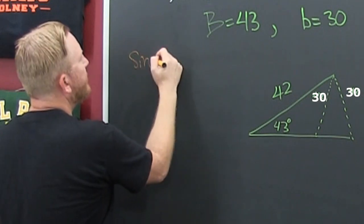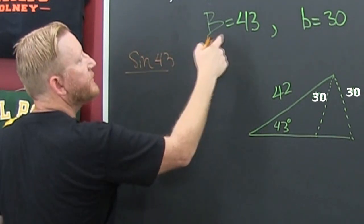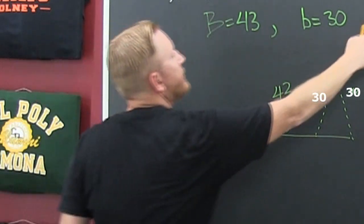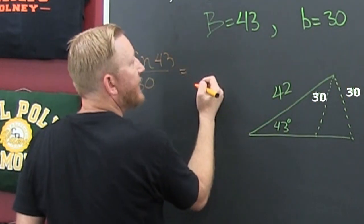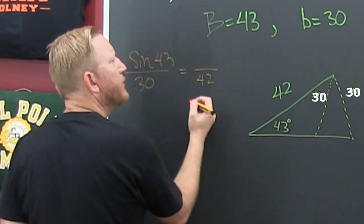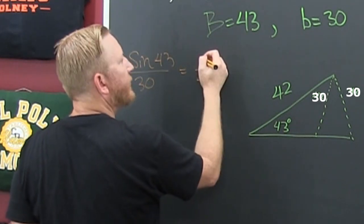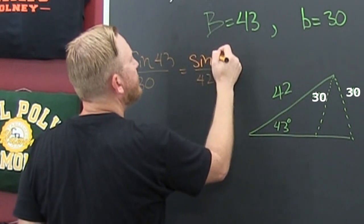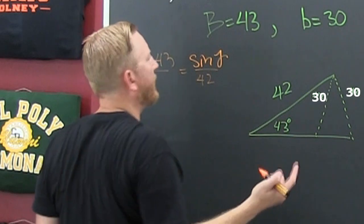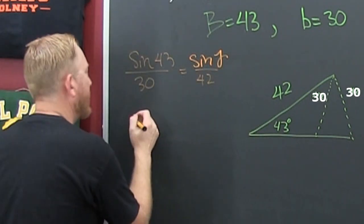So we're going to have the sine of 43 is to the one opposite, 30. And then what are we doing? We're trying to find C. Okay. No, we have C. It's 42. So we're looking for the sine of gamma. They use gamma for C. All right. So here, let's see what that's going to be.